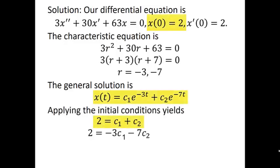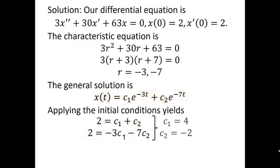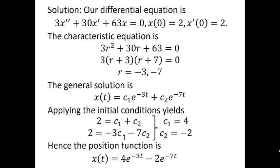We apply the initial conditions. The fact that x of 0 is 2 tells us that c1 plus c2 is 2. The fact that our initial velocity is 2 tells us that minus 3 c1 minus 7 c2 equals 2. When we solve that system, we find that c1 is 4 and c2 is negative 2. So our position function becomes 4e to the minus 3t minus 2e to the minus 7t. Because we were in the case where we had two distinct real roots, this would be an example of over damped motion.